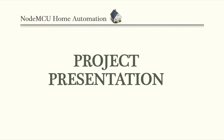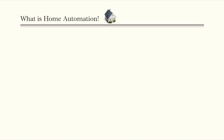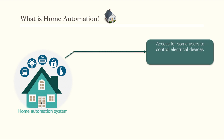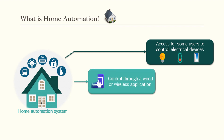As always, I start my project with a short description where I collect some information from the internet about the project we are about to create. Starting with the basics, we need to first define the components of a home automation system. It's simply a system that allows users to have access to some electrical devices like lighting devices, temperature monitoring, and door control devices. This access is monitored through a basic application connected to the main system through a wireless or wired protocol.